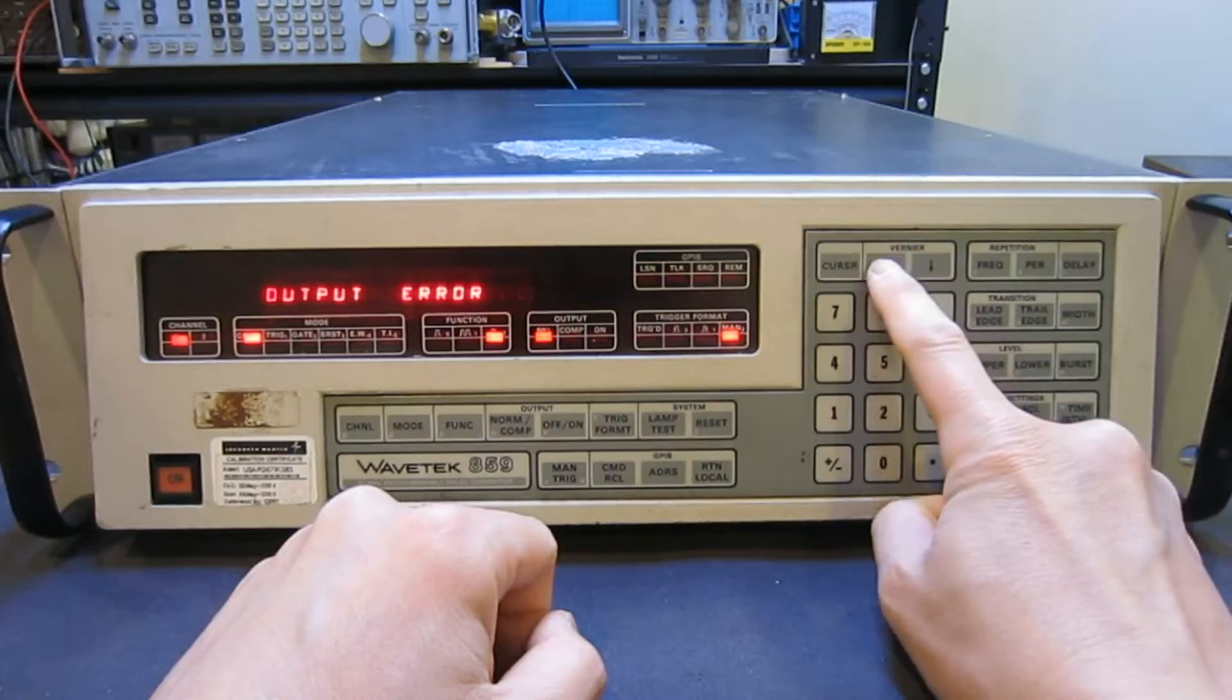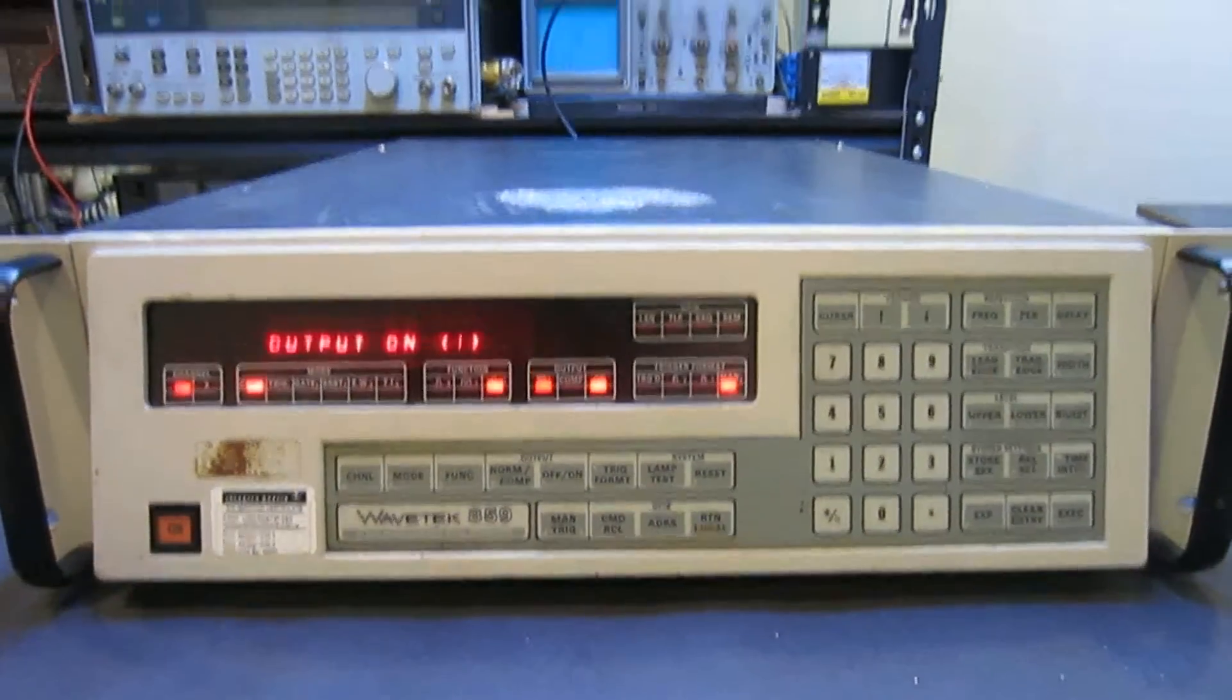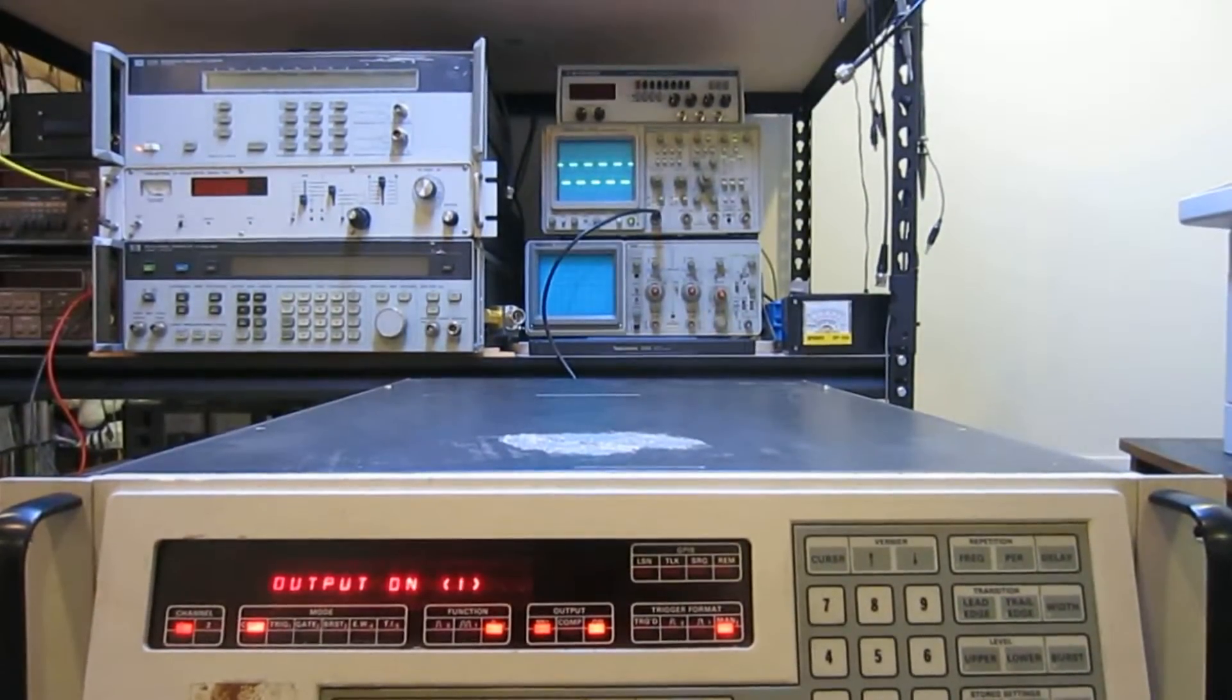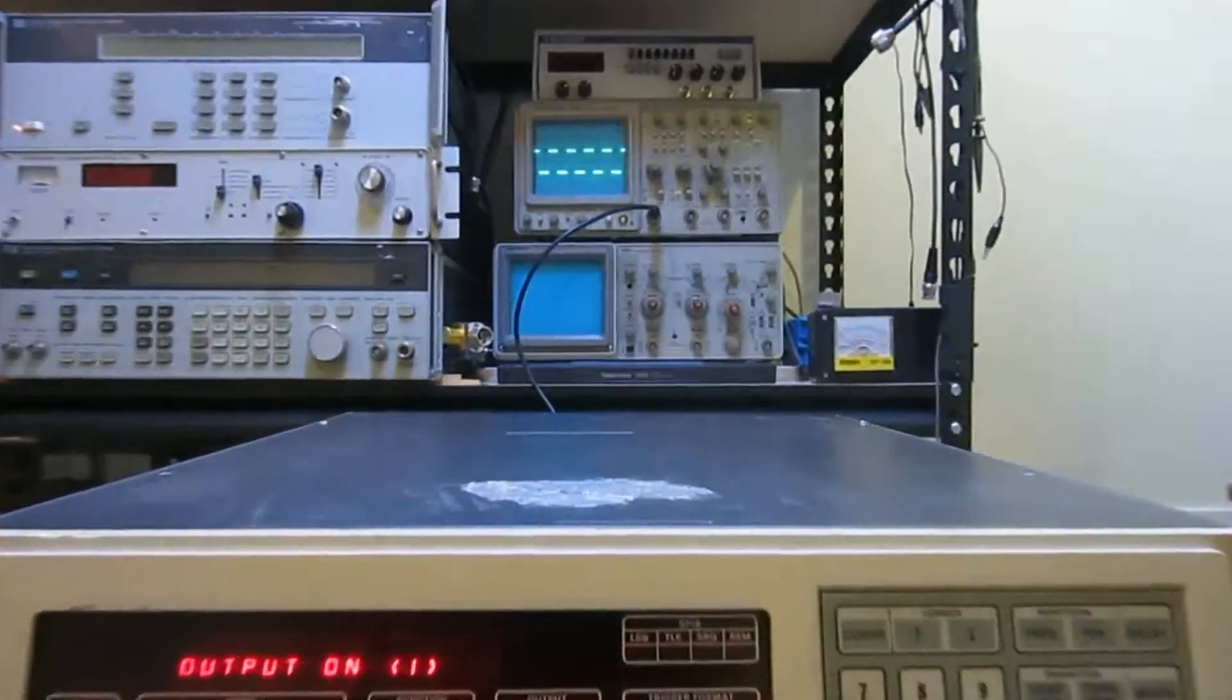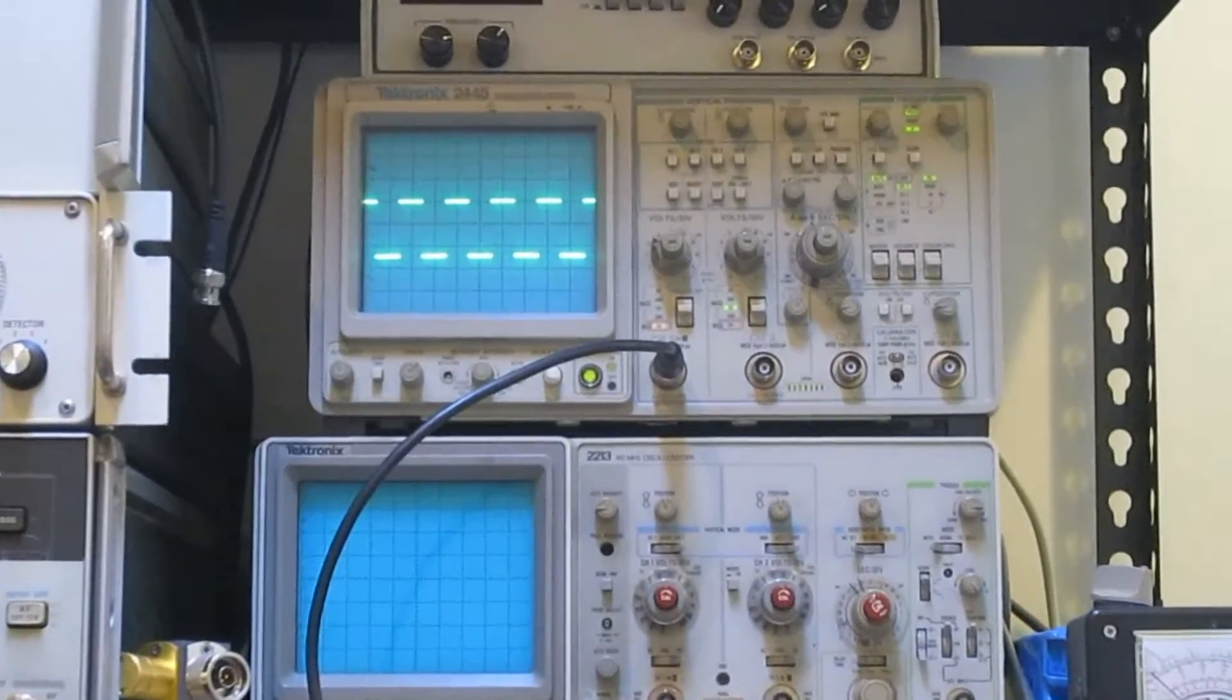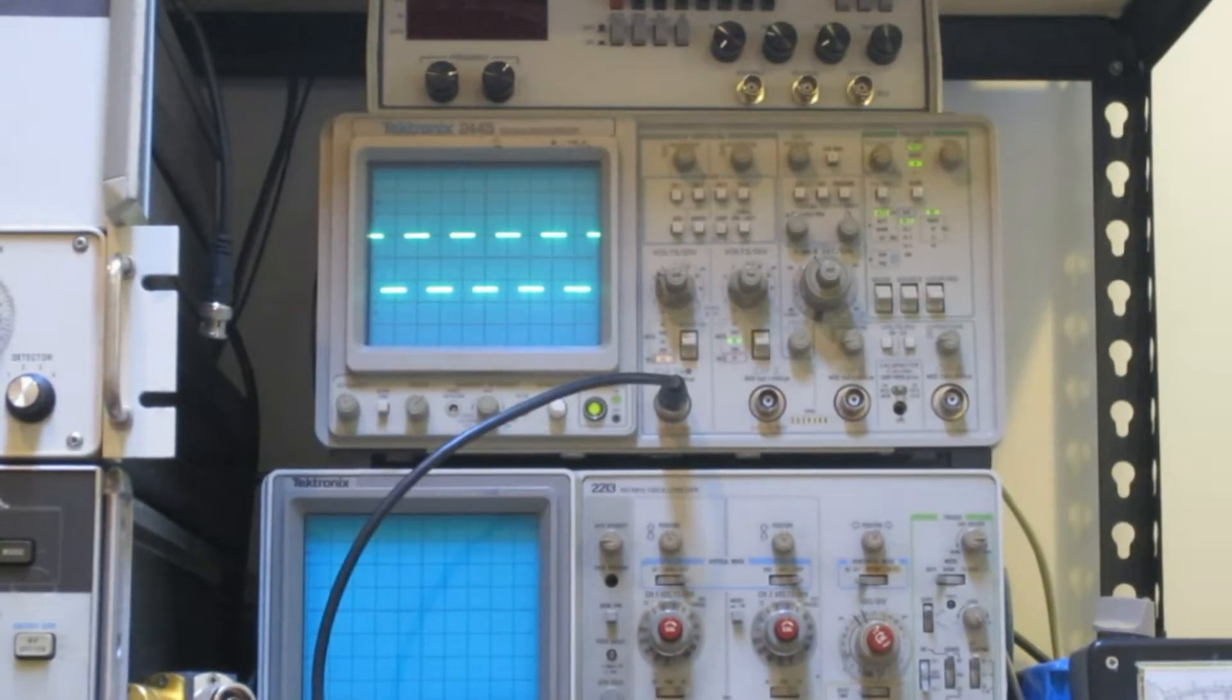If you look at the oscilloscope up here, I have it back there. Later on I'm going to change that to a digital scope so you can see some of the pulses. Right now this is just the actual square wave generated at 1 kilohertz.